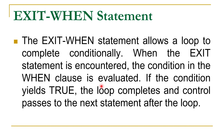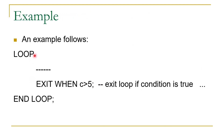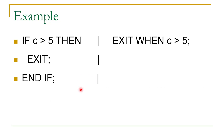Let us understand EXIT WHEN with an example. Here we have a simple loop starting with LOOP and terminated with END LOOP. Between these we have a group of statements including an EXIT WHEN statement: EXIT WHEN c > 5. This means when the counter value is more than 5, we exit from the loop and control resumes from the next statement after END LOOP. There is no need to wrap EXIT WHEN inside an IF block because the condition is already included in the statement.